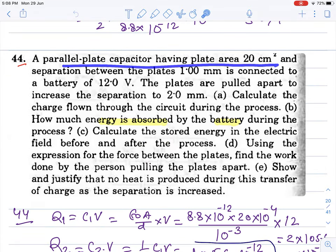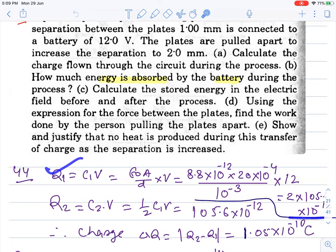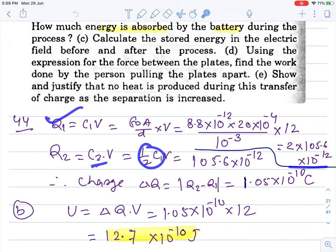Next is question 44. Parallel plate capacitor with plate area given and separation 1 mm, connected to a 12V battery. The plates are pulled apart to double the separation to 2 mm. When the gap changes, the capacitance changes and so does the charge holding capacity. Q1 is found from C1 when gap is 1 mm. Q2 is half of Q1 since capacitance halved. So charge delta Q flows back to the battery, because second time capacitance is less and charge holding capacity decreased.